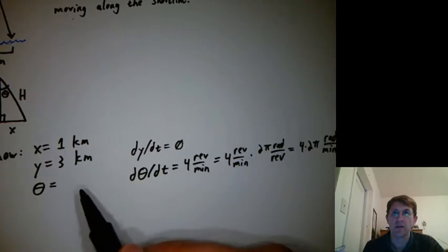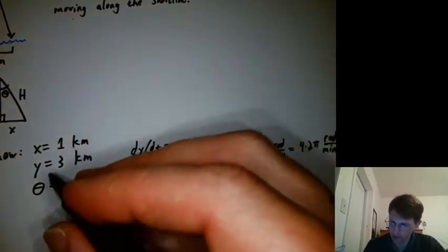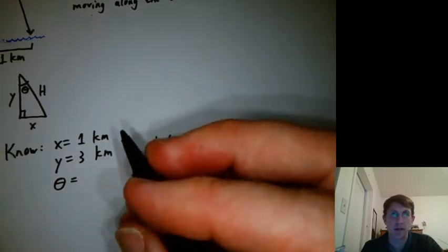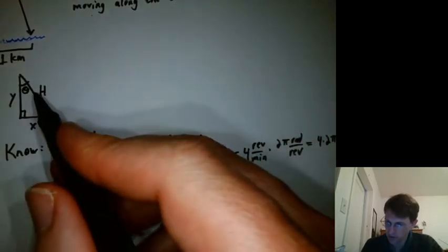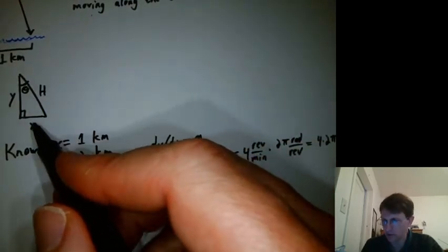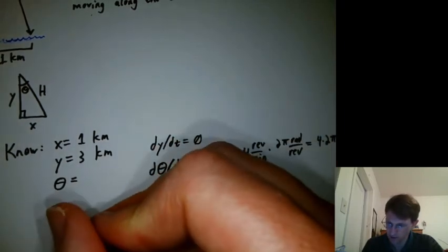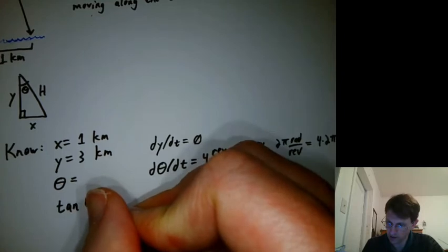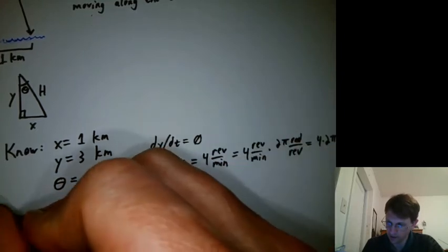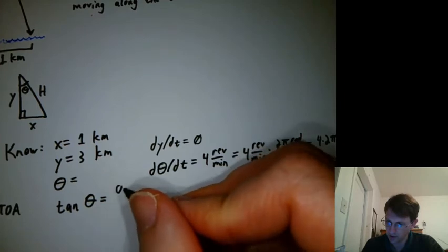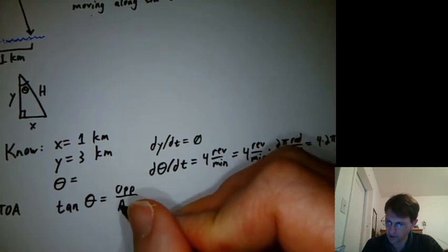All right. What else are we going to do? How can we get theta? Got to think about our right angle trig. We don't know h. We could figure it out, but we do know x and y. So remember tangent theta, so there's the TOA part of SOHCAHTOA, is opposite over adjacent.